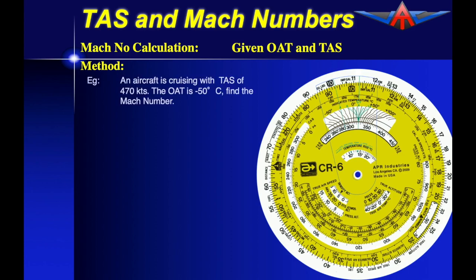For our example we're going to use an aircraft with a TAS of 470 knots with an outside air temperature of negative 50 degrees C. Our objective is to find the Mach number.